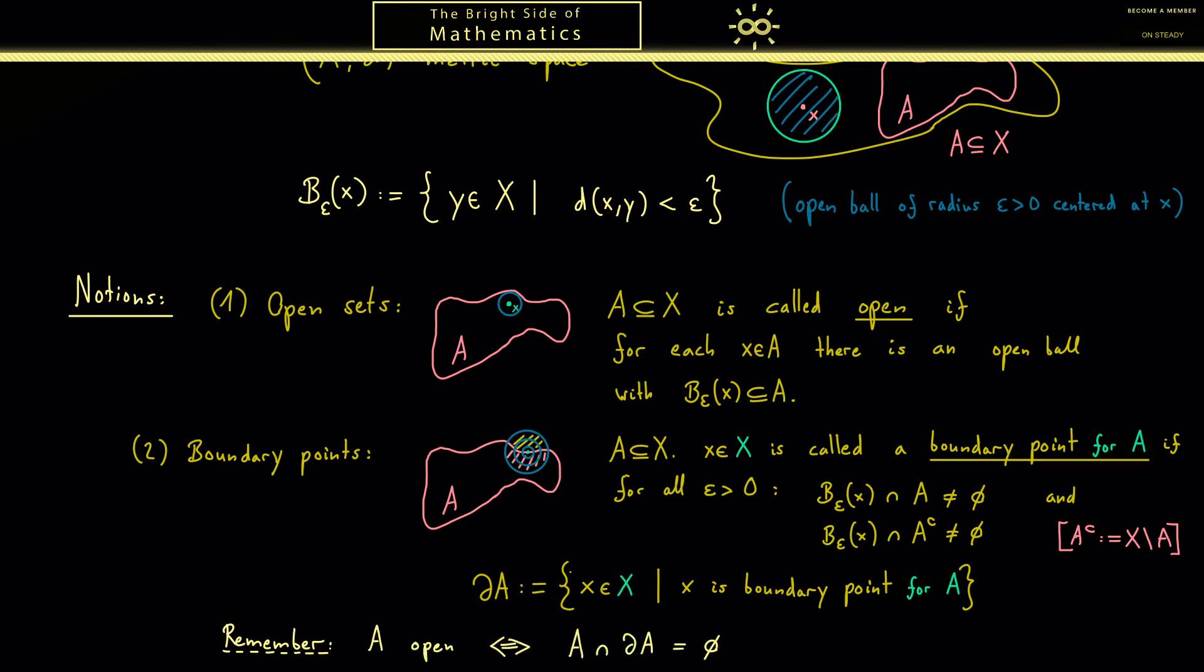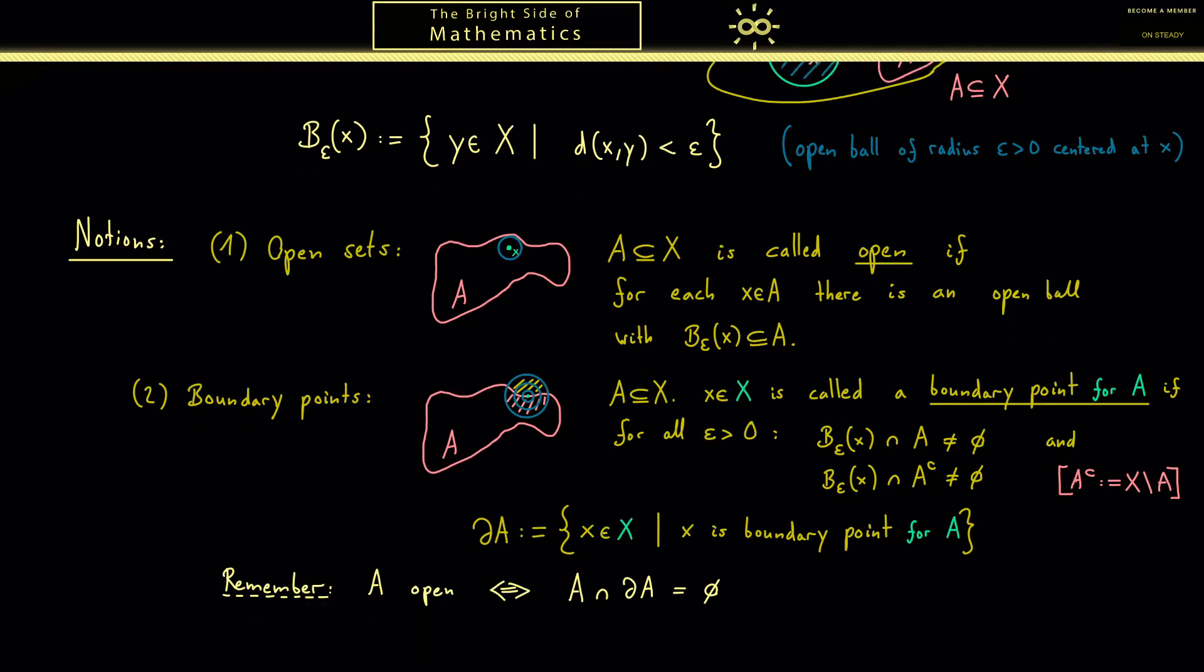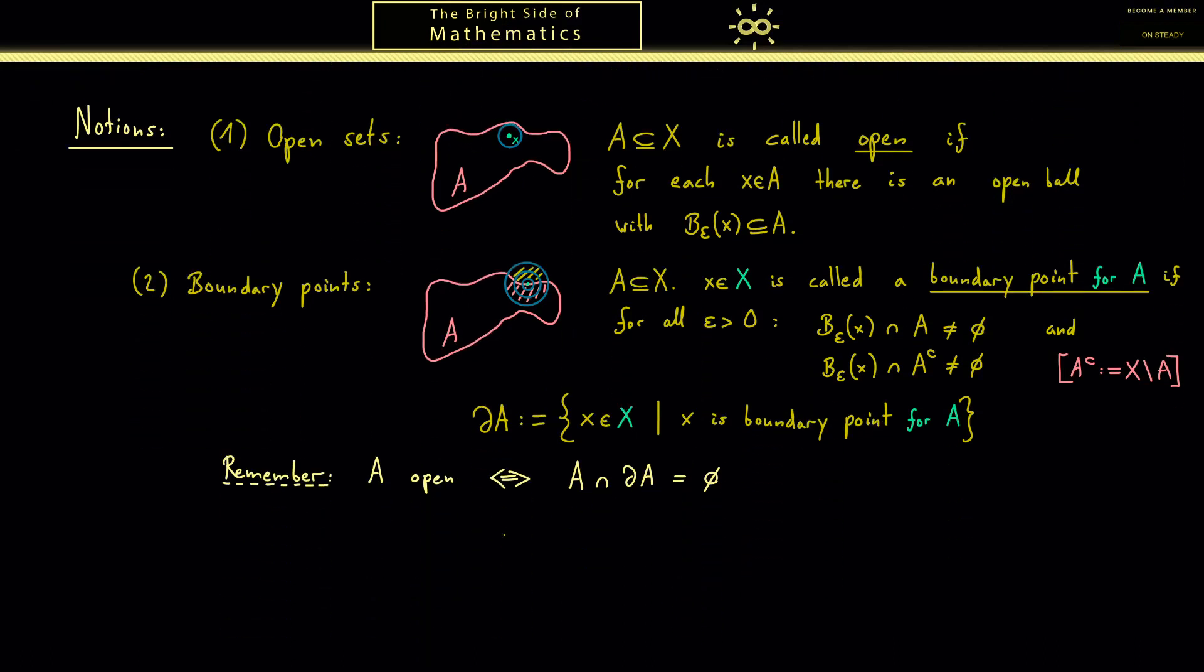Now you can remember an open set is exactly such a set where all the boundary points are outside of A. When you see this then you immediately understand what a closed set should be. It should be a set where all the boundary points belong to this set. However that's not what one uses as the definition for closed sets. The definition is much simpler: a subset A in X is now called closed if the complement in X, which is A^c, is open.